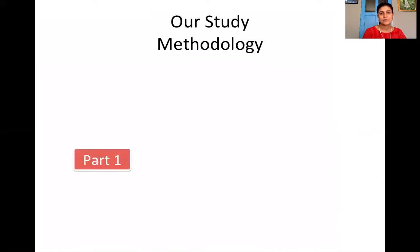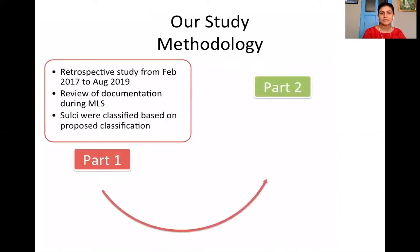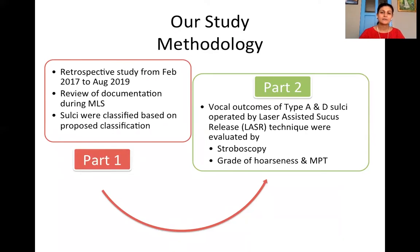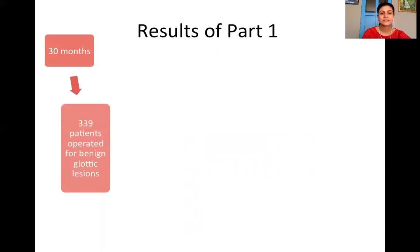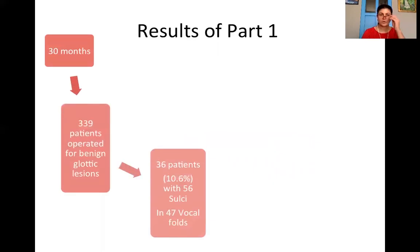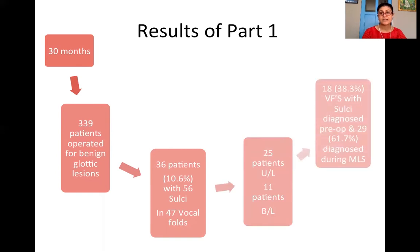Our study methodology was in two parts. The first part was estimating the various types of sulcus we found over a 30-month period after microlaryngoscopy. The second part documented the results of a surgical technique known as laser-assisted sulcus release surgery, or the LASR technique. In the first part, we had 339 patients operated for benign glottic lesions, and 10.6% of these patients had a sulcus.